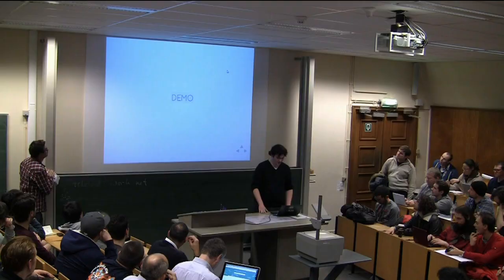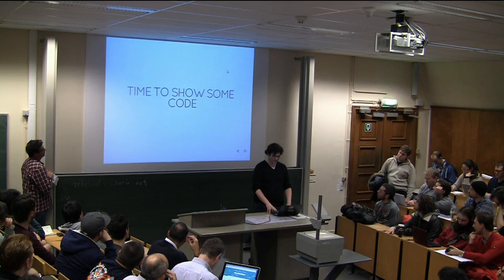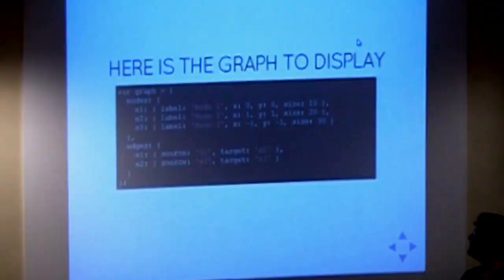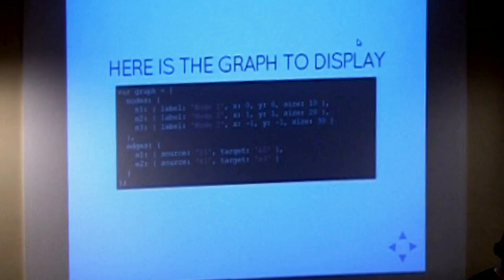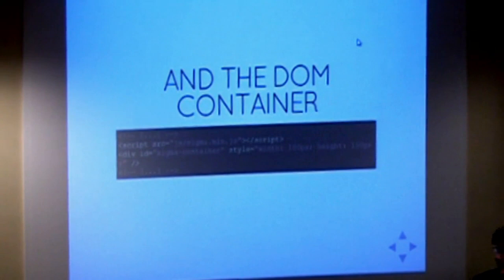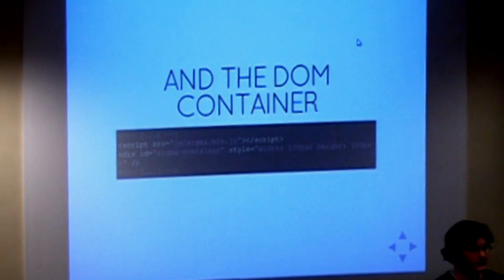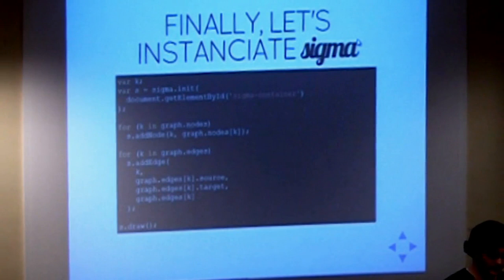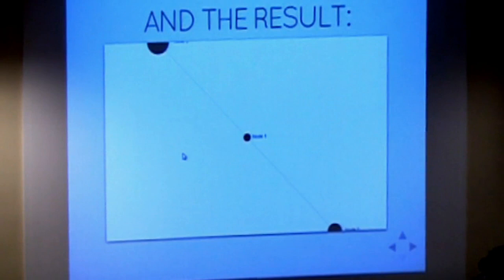I'm going to show you how to use it from source. So you have a graph: three nodes and two edges — node one is connected to nodes two and three, and they have positions. In your HTML file you just put a div as the container of your visualization and import the sigma script. Then you use the sigma.init method on that container, add nodes and edges, and at the end call draw. The result is here — it's not really awesome, but it works.